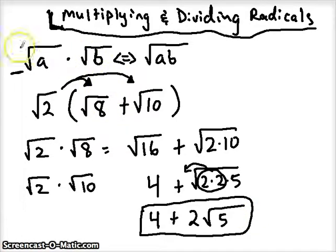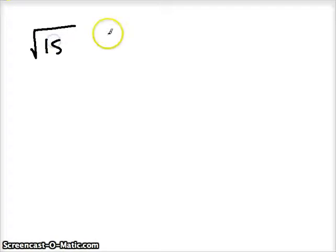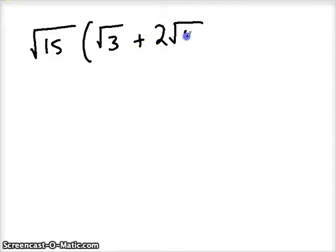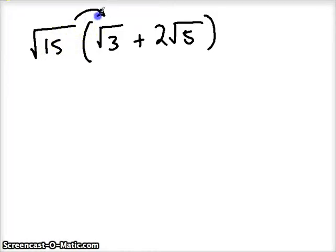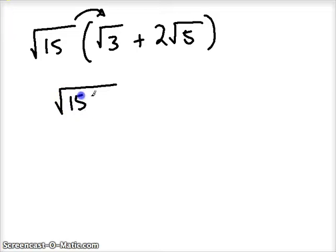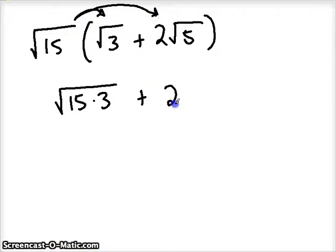We're multiplying things under a radical as long as they have the same index. Let's do another example. Same kind of stuff — let's distribute. This time inside we're going to have a coefficient, a number on the front. Remember, we can't multiply that 2 by the square root of 15; we can only multiply things under the radical. So for the first distribution, the square root of 15 times the square root of 3 would give me the square root of 45, but I'm going to keep them factored. That 2 stays on the front — I'm not multiplying it by anything — but I could multiply 15 and 5 together, and I'll leave those factored as well.